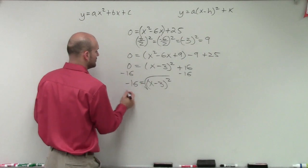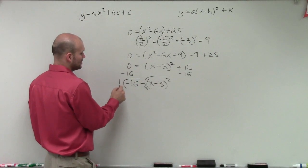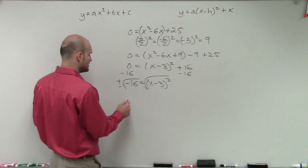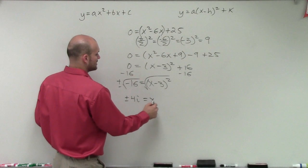Now I'm going to take the square root of both sides. And remember, whenever you take the square root of both sides, you have to make sure you include the plus or minus. And remember, we're taking the square root of a negative number. So that's going to be plus or minus 4i equals x minus 3.